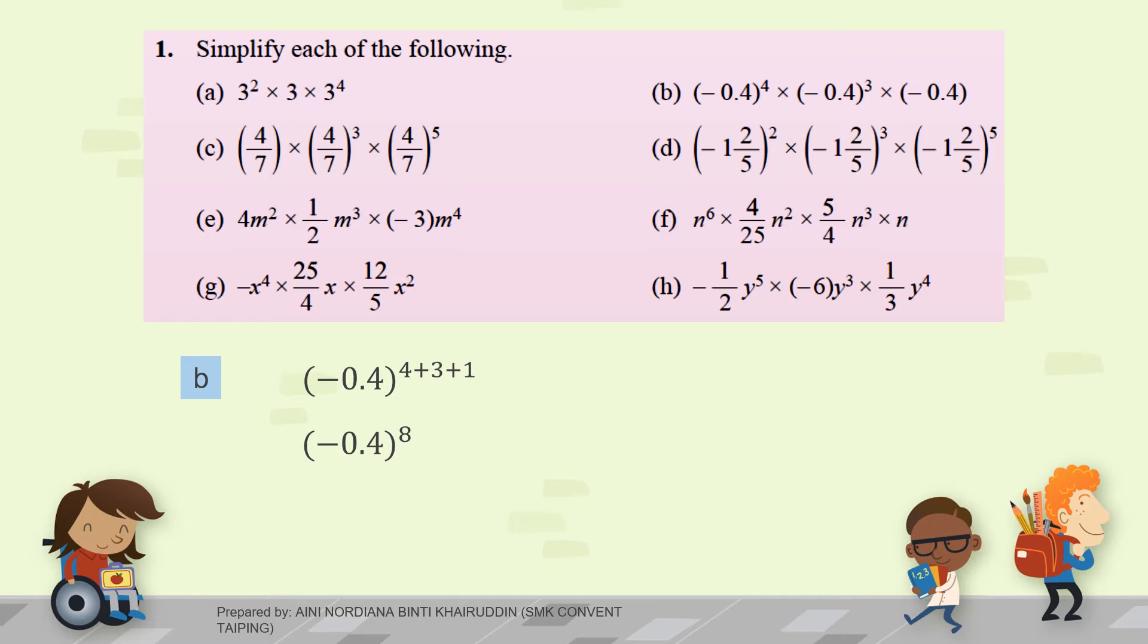For question C, have a look at this. Because we have single number here, the index is 1. And don't forget your bracket. So, the answer is bracket 4 over 7 to the power of 9.